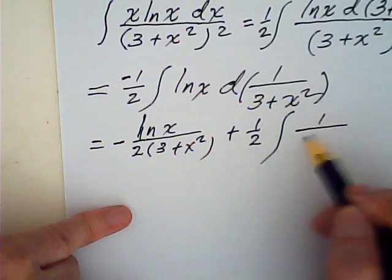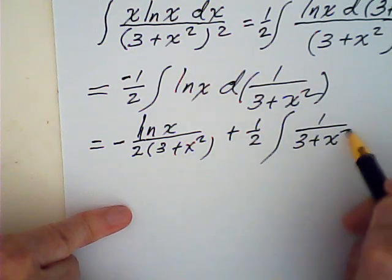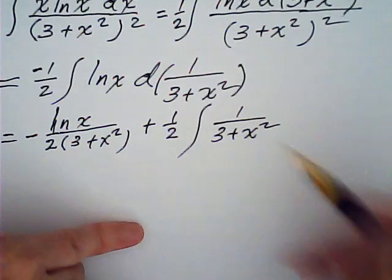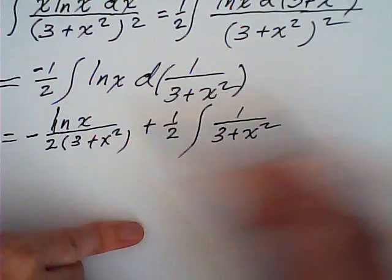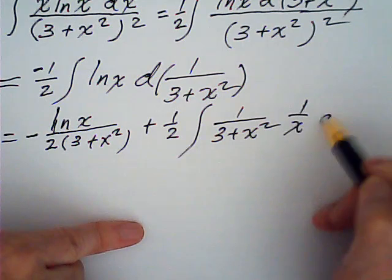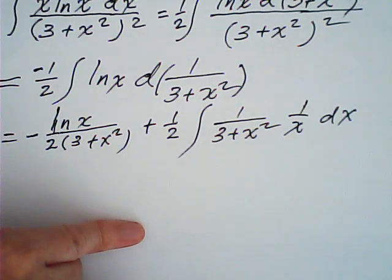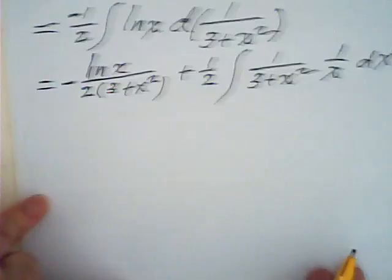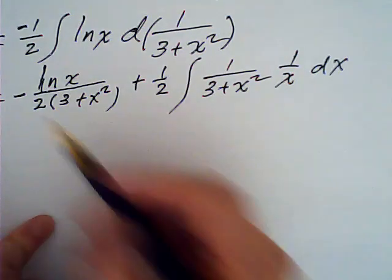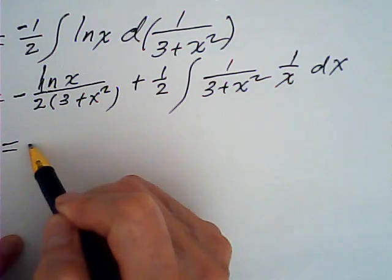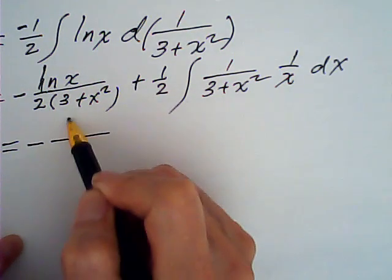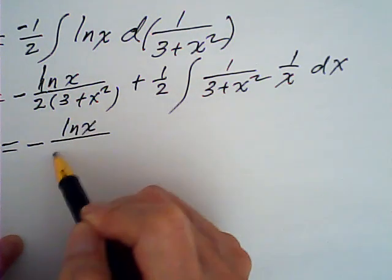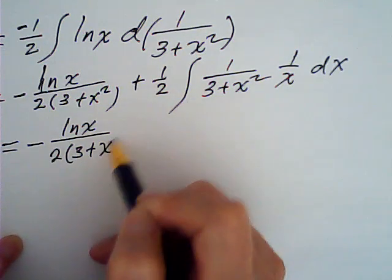V is this, U is, d is 1 over x. So this is negative log x over 2 times 3 plus x squared.